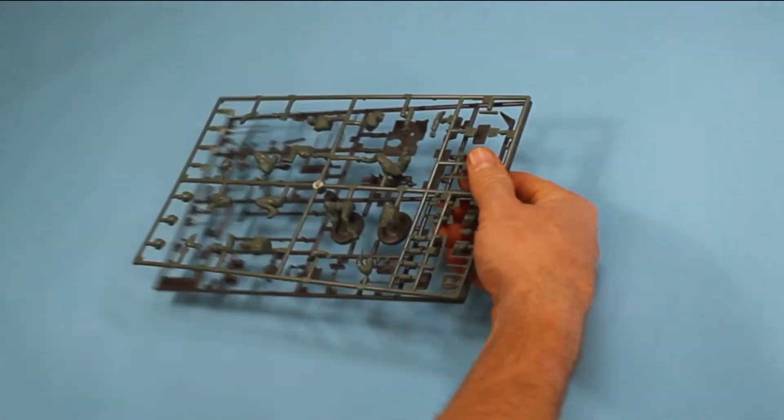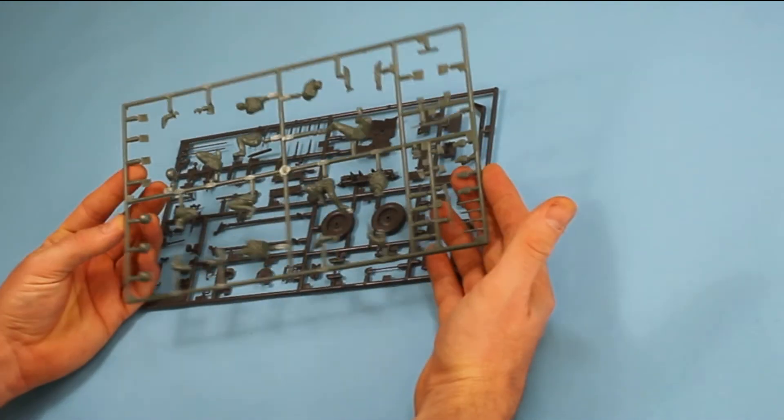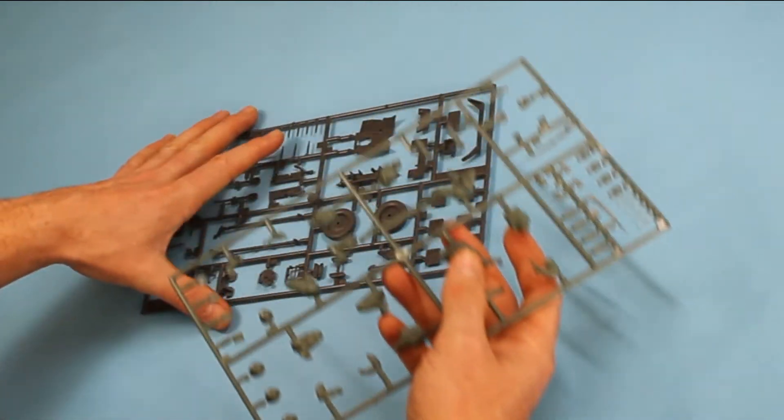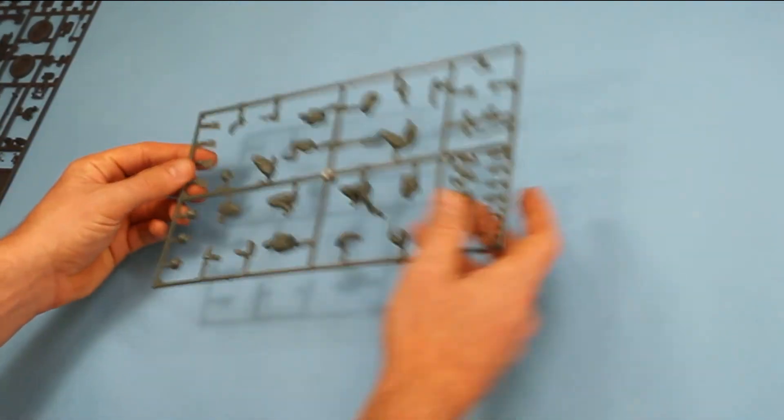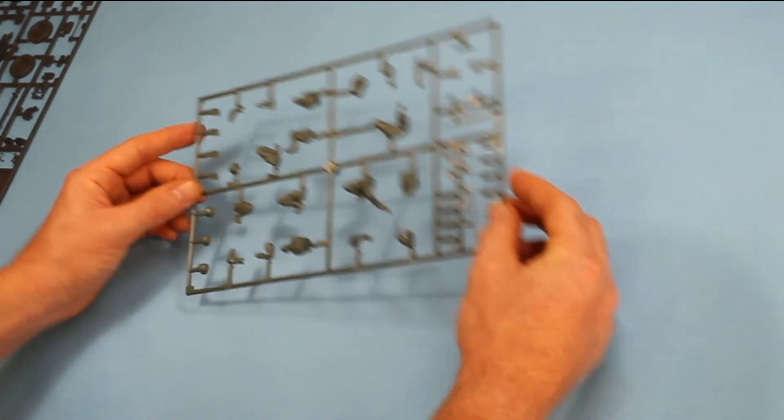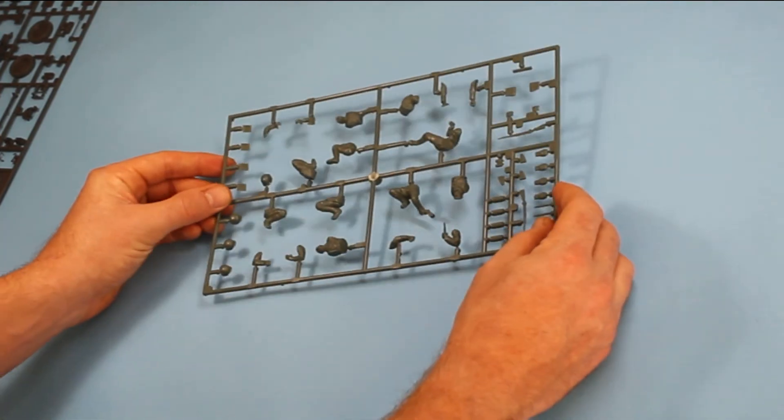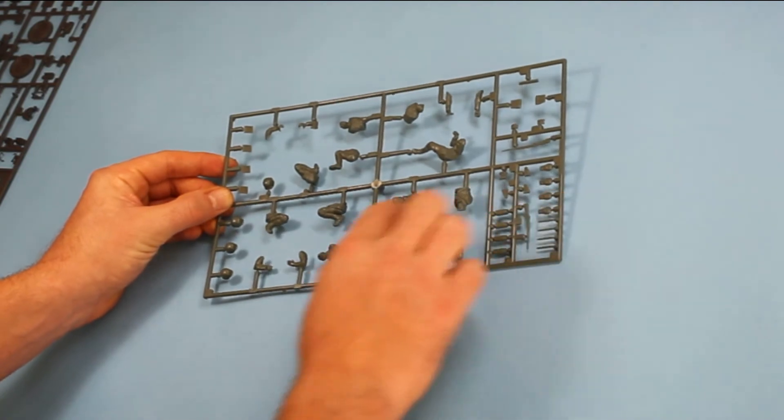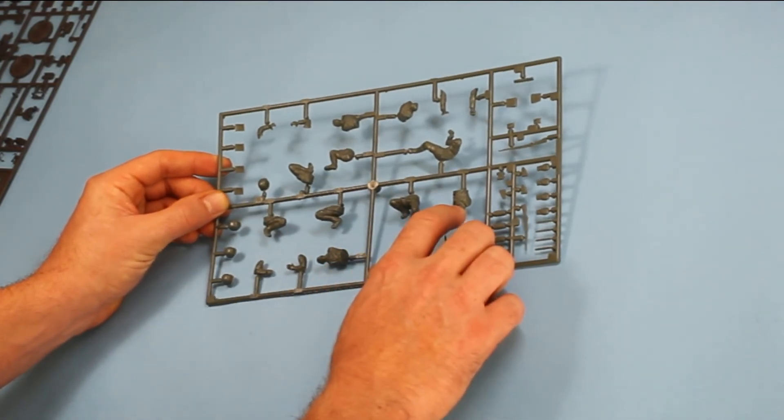Then there's two sprues in a bag here. You've got one sprue in green for the figures. We'll start with the figures. They are dated, obviously again, as it's a 70s kit. They're certainly usable and workable.